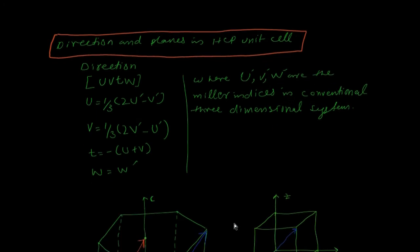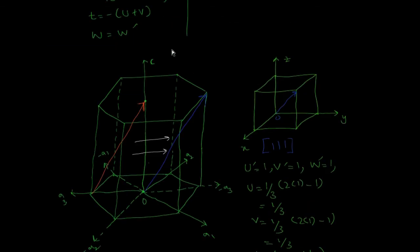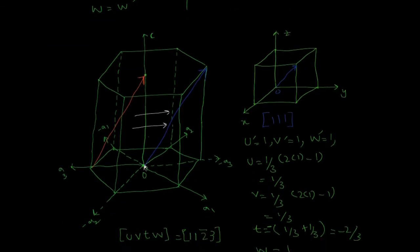Let's suppose this is the given HCP unit cell. This is the a1 direction and this is the minus a1 direction, this is your a2 direction and minus a2 direction, this is your a3 direction and minus a3 direction. Let this red line be a certain direction and we have to find the indices for it.